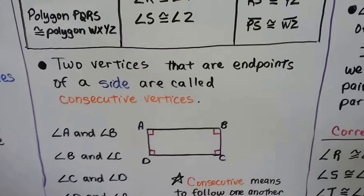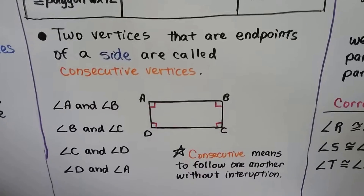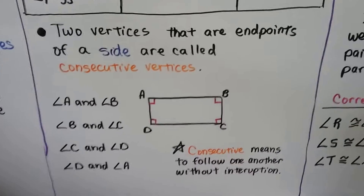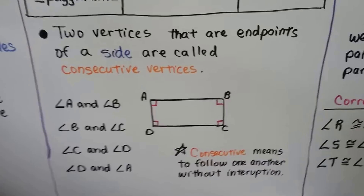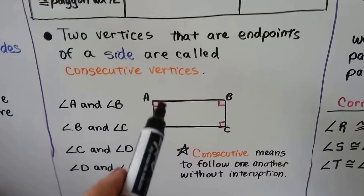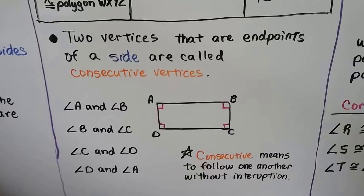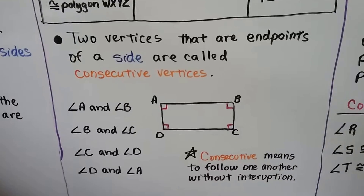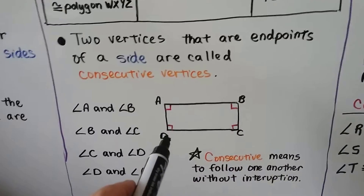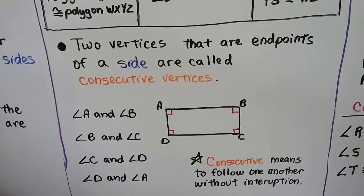Two vertices that are endpoints of a side are called consecutive vertices. Consecutive means to follow one another without interruption, one after the other. So A and B are a pair of consecutive vertices; B and C are a pair; C and D are consecutive; and D and A are consecutive.